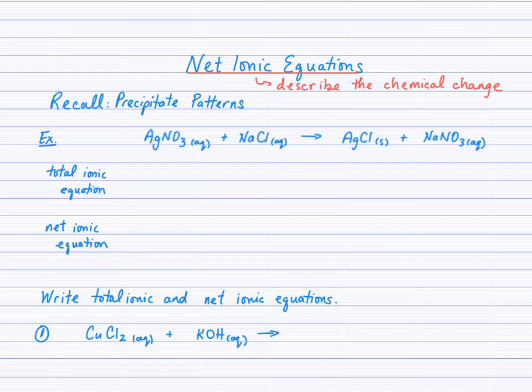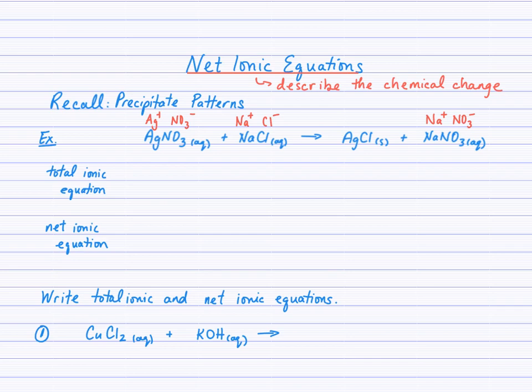I'll go across the top and note the silver ion, the nitrate ion, the sodium ion, and the chloride ion. On the products side, I see silver chloride solid, the sodium ion, and the nitrate ion. I'm paying particular attention to compounds that are aqueous, because the silver chloride solid keeps its ions together — I won't be separating those in the total ionic equation.